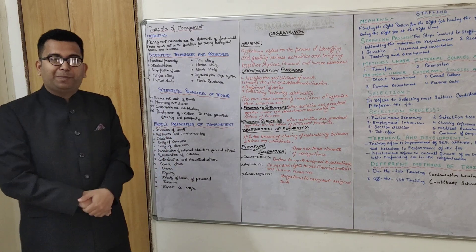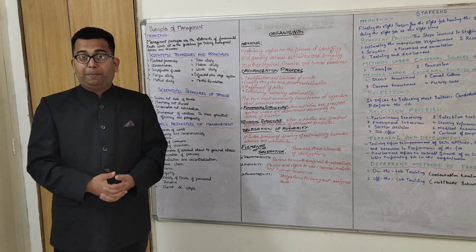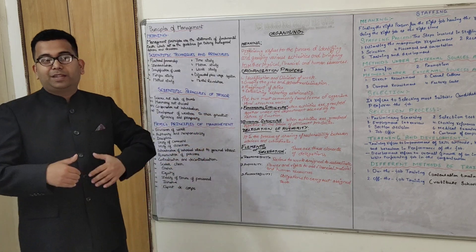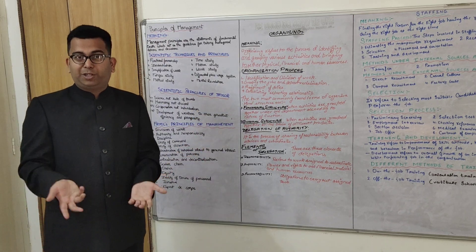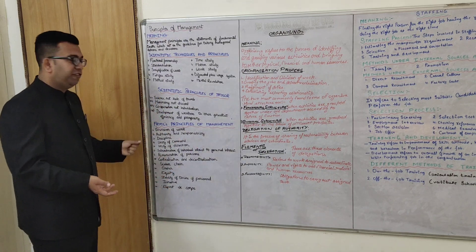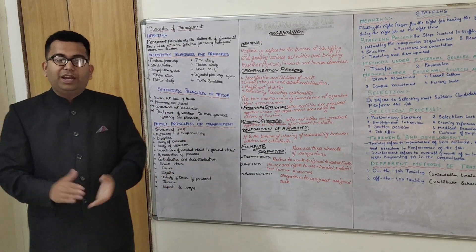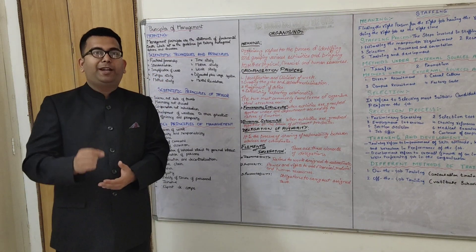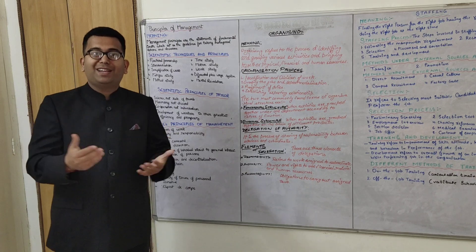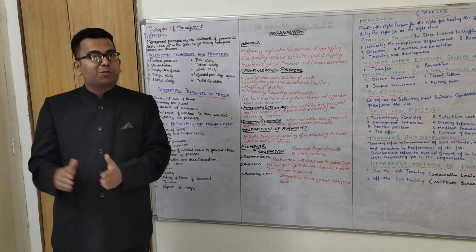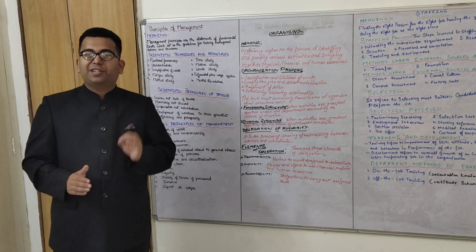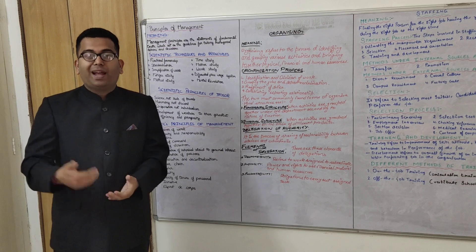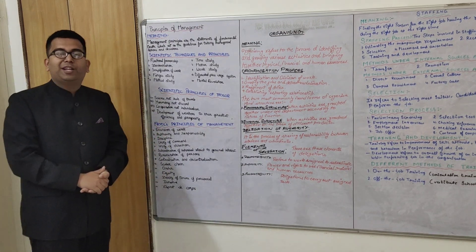These 14 principles are very interesting — we can apply them in our lives also. Students in class 12 often do projects on these for their board practicals. The first principle is division of work: divide the total work into small parts and give each part to the person who is specialized in it. This achieves specialization, efficiency, and greater productivity. Second is authority and responsibility: authority means power to take a decision, and responsibility means the obligation or duty to perform a task.